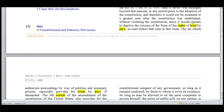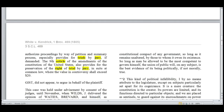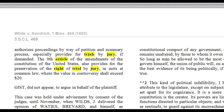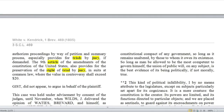Therefore it could not be extended to a greater sum after the Constitution was established without violating the Constitution — it would operate to deprive the citizens of the state of the right of trial by jury as used before that time. The Act which authorizes proceedings by way of petition and summary process especially provides for trials by jury if demanded. The 9th article of the amendments of the Constitution of the United States also provides for the preservation of the right of trial by jury in suits at common law — not civil law — in suits at common law, where the value in controversy shall exceed $20.